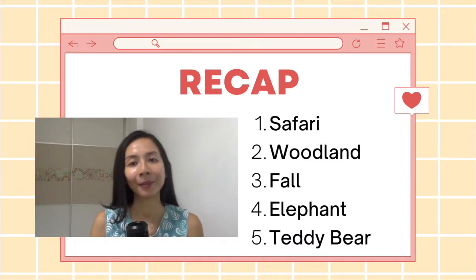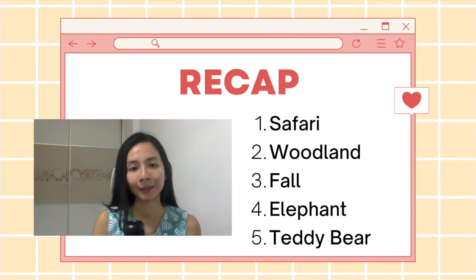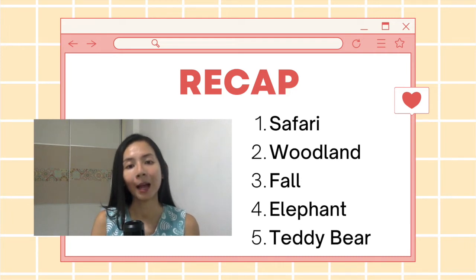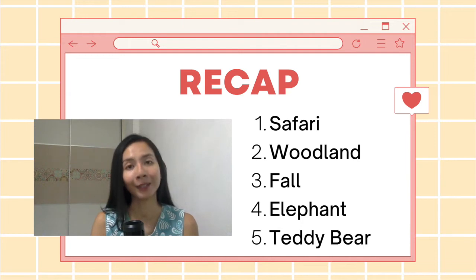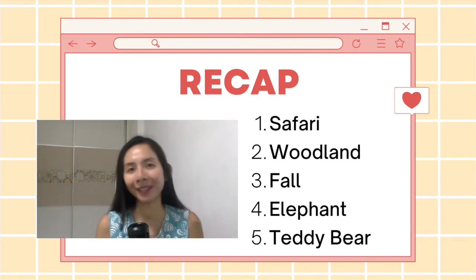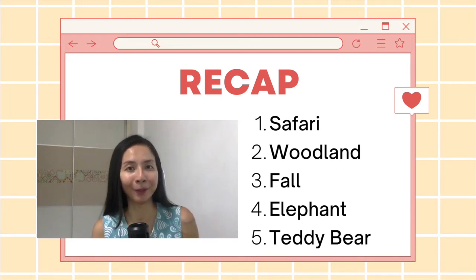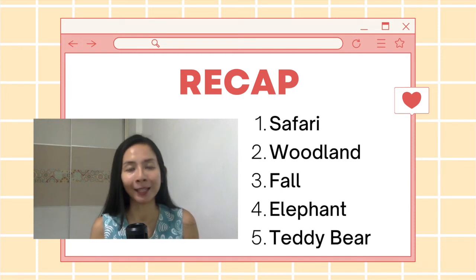Let's do a recap. These are the top 5 baby shower design themes: Safari theme, Woodland theme, Fall theme, Elephant theme, and Teddy Bear theme. Hopefully this will give you some ideas on what to create for your next digital product. Have fun designing and hopefully you can get all these designs up as soon as possible to get more sales. If you want to save the hassle of creating digital printables from scratch, do check out my online store in the description below — it provides commercial license templates that you can use for your next digital products.